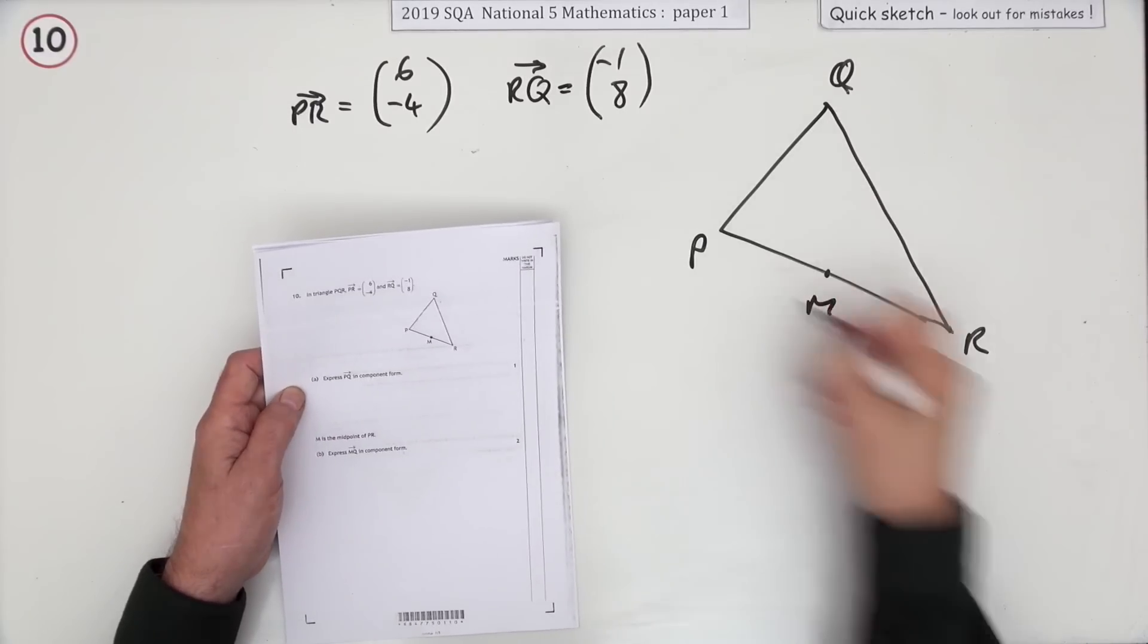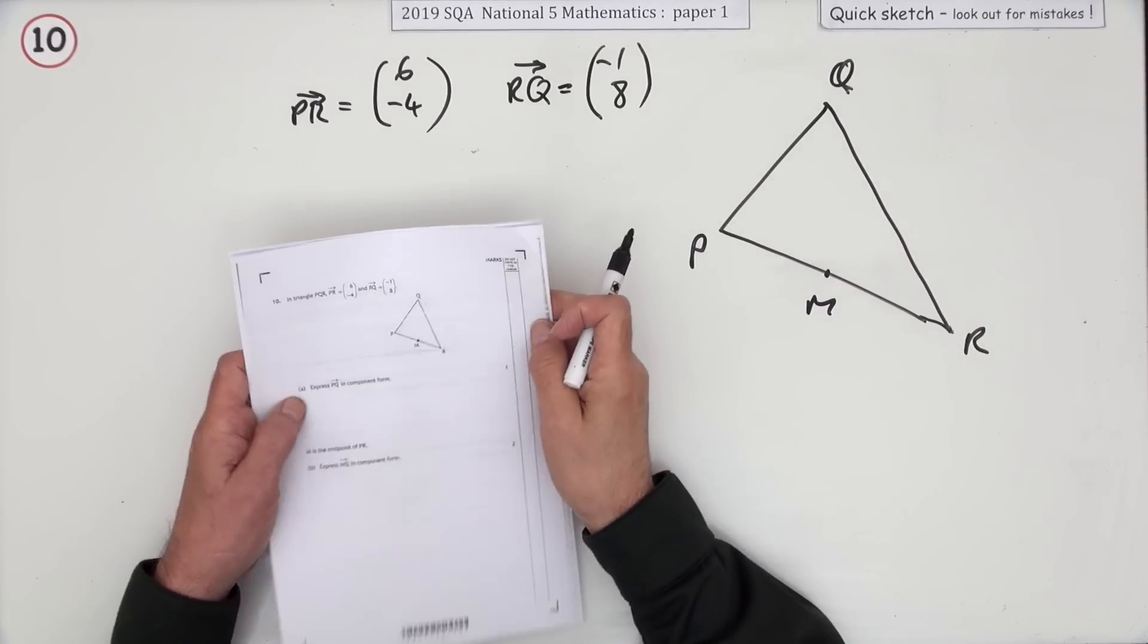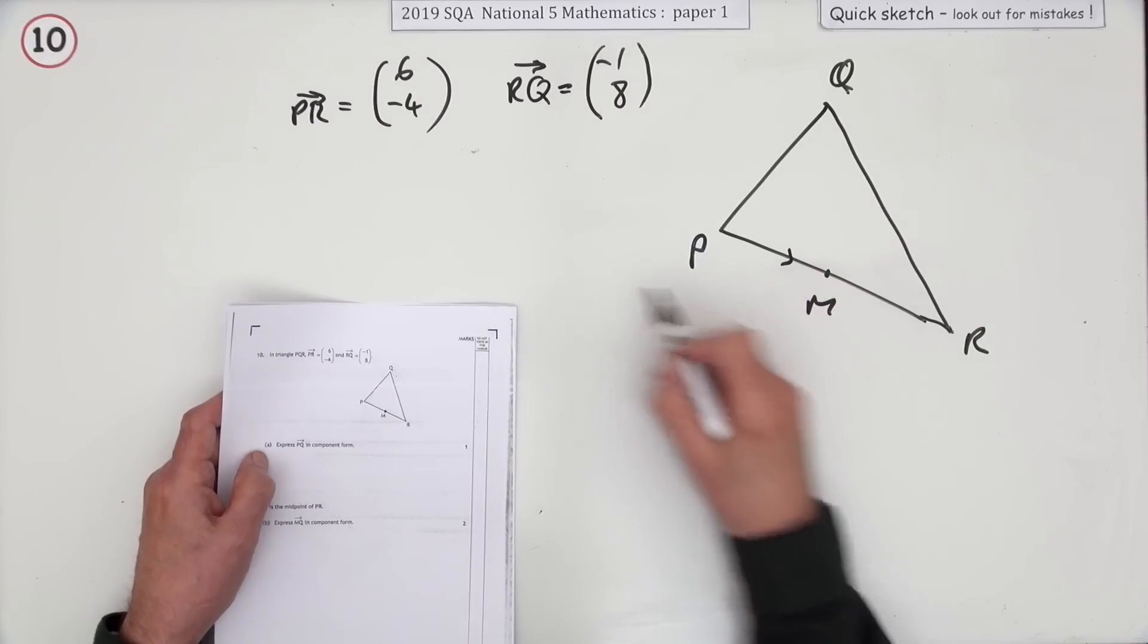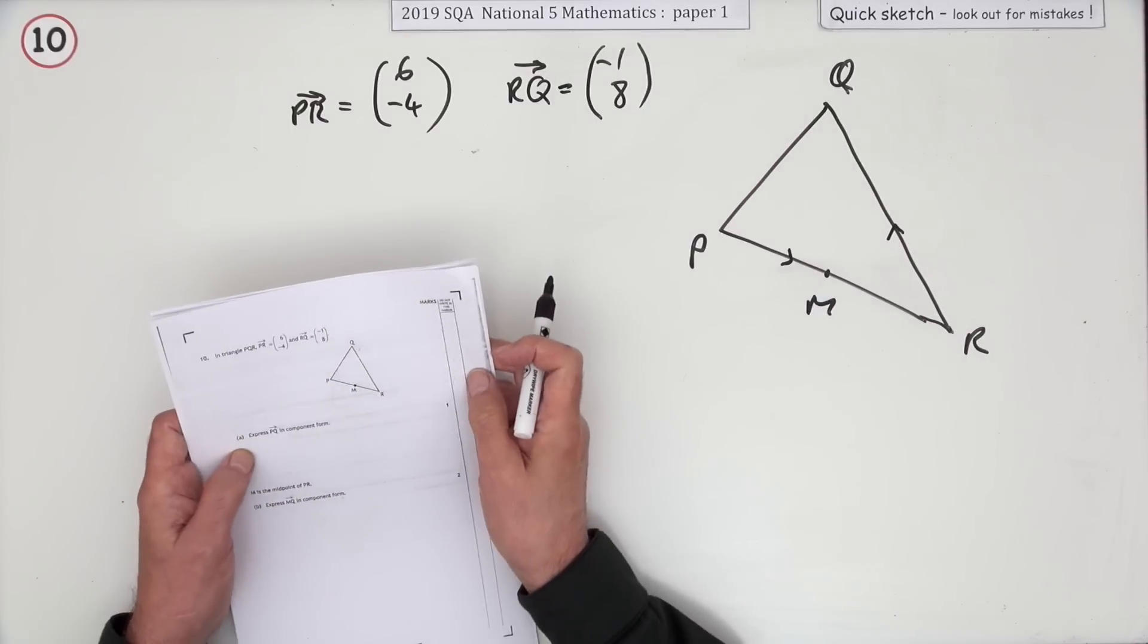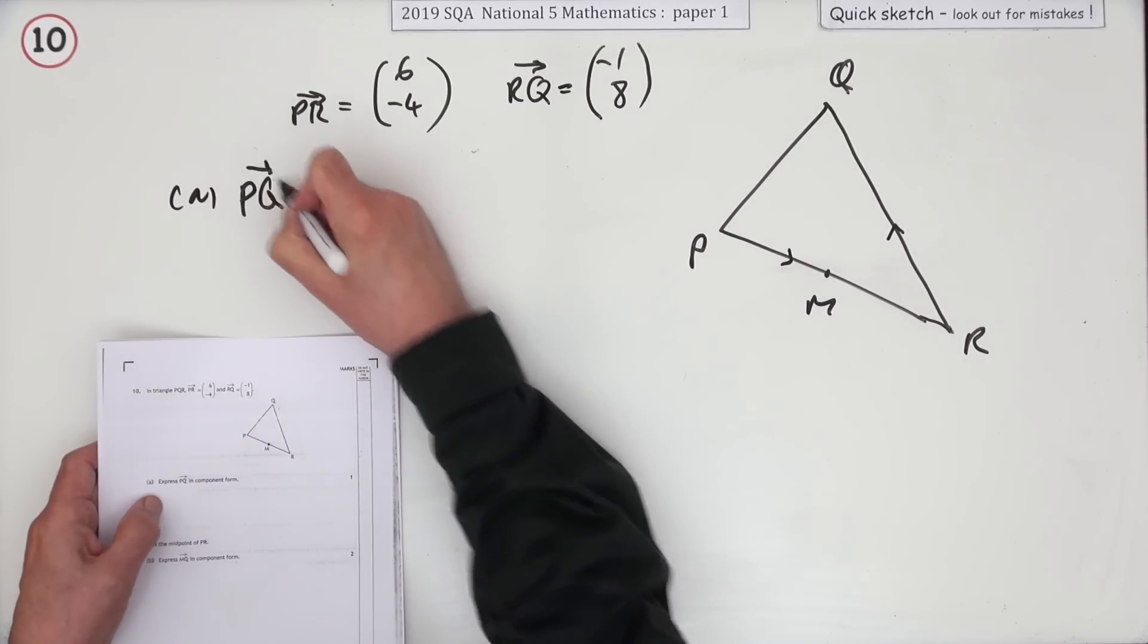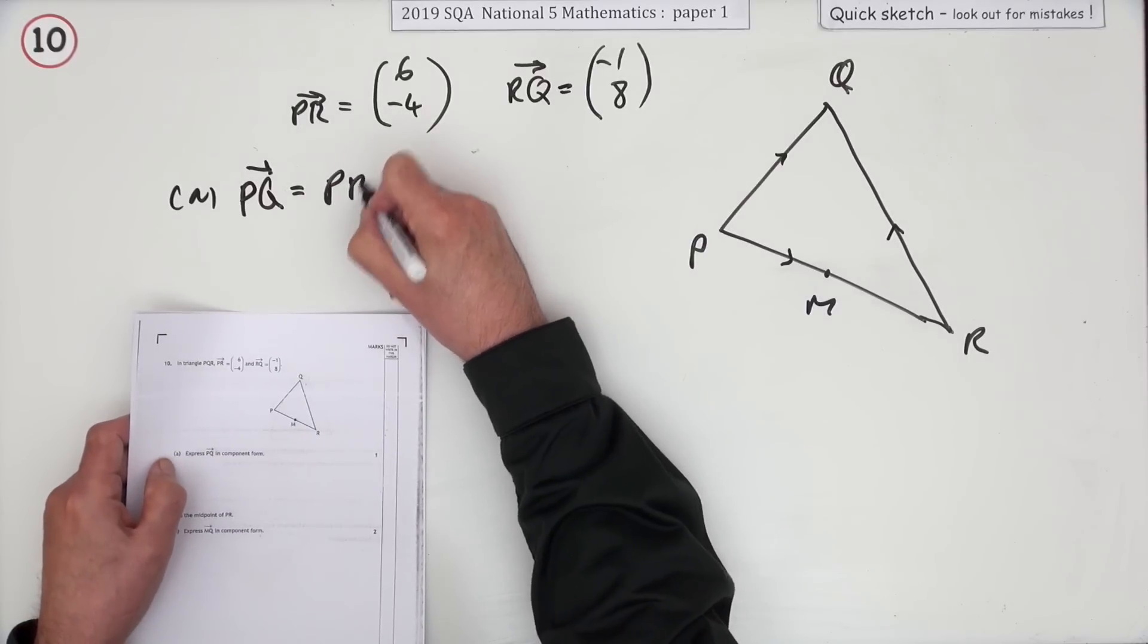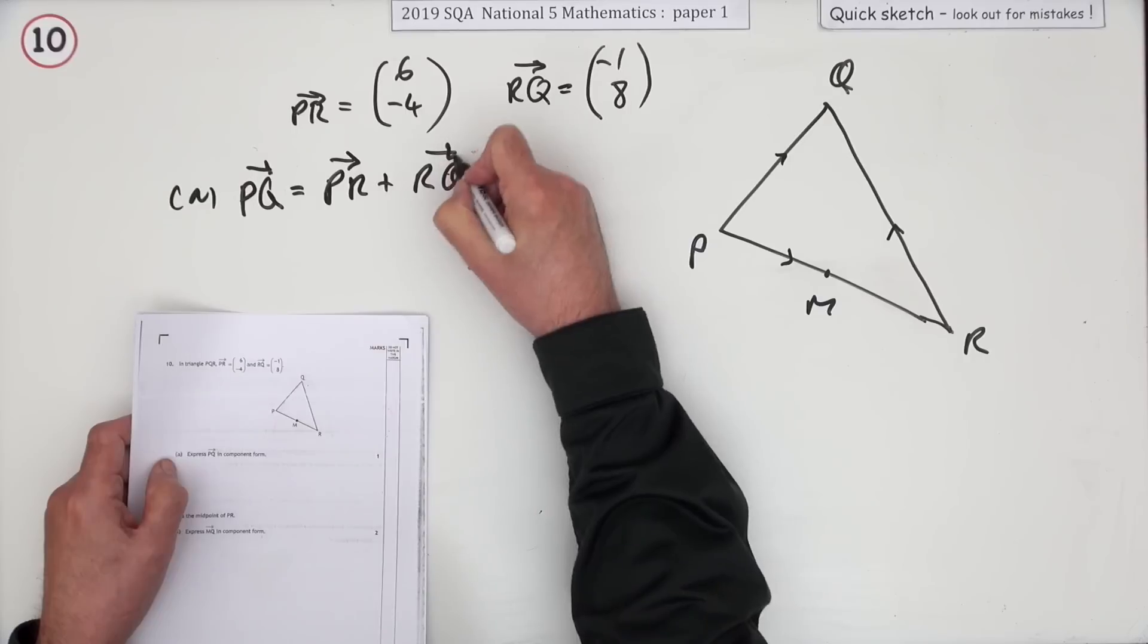Number 10 then, triangle vectors working your way around triangles. It says PR can be represented by this vector (6, -4) that's heading that way. RQ, so that's heading that way, is (-1, 8). You have to express PQ in component form, so I want to go from here to here. Well, start at P, go to R, and then once you're at R, go to Q.